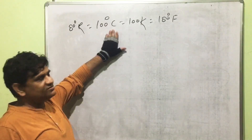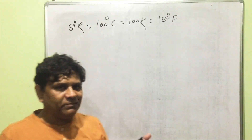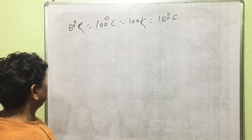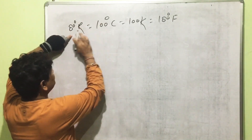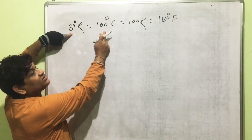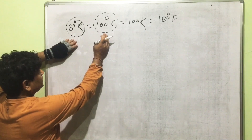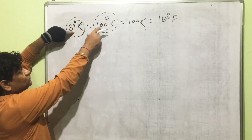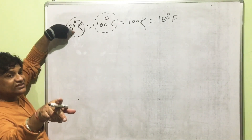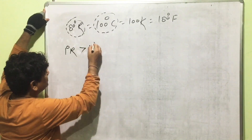Applying this: 80°R = 100°C = 100 K = 180°F. Comparing Réaumur (80 divisions) with Celsius (100 divisions) in the same length — Réaumur has fewer divisions, so the length of one unit is more on the Réaumur scale. Therefore, 1°R > 1°C. Since 100°C = 100 K, we have 1°C = 1 K.